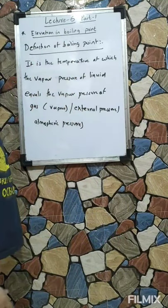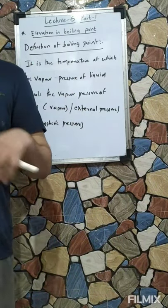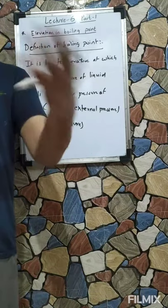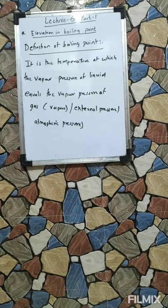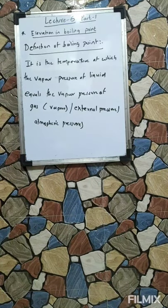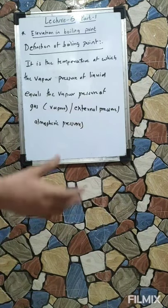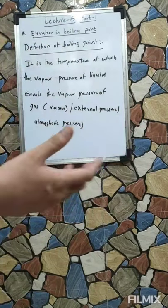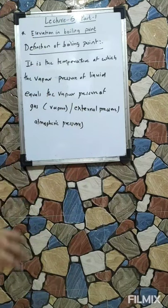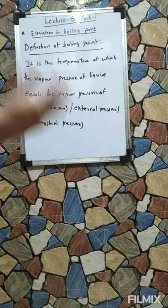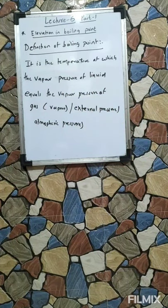It is the temperature at which vapour pressure of liquid equals atmospheric pressure or external pressure. It depends on where we are — if we are on Earth, it is atmospheric pressure. If we are on Jupiter, the external pressure is different.